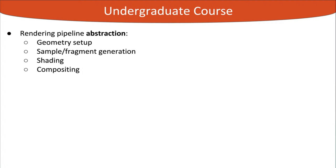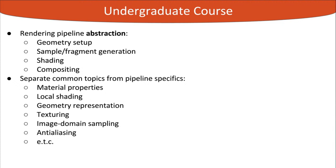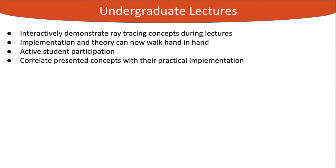For the undergraduate course, we abstracted the rendering pipeline into four generic stages — geometry setup, sampling or fragment generation, shading and compositing — so they could be independently mapped to rasterization or ray tracing. This allowed common topics such as material properties, local shading, geometry representation, texturing, image domain sampling, and anti-aliasing to remain separate from the underlying pipeline. Lectures were enriched with interactive Rayground demonstrations where implementation and theory could walk hand in hand, prompting more students to participate and correlate concepts with their practical implementation.